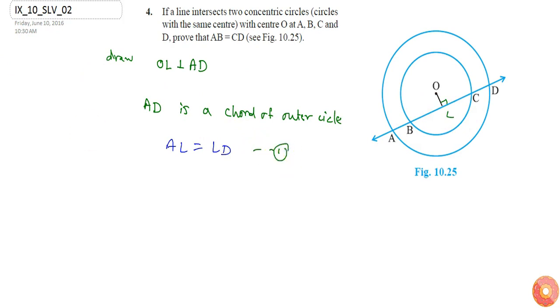Since BC is a chord of the inner circle and OL is also perpendicular to BC chord, I can say that OL divides the chord BC into equal parts. So BL will be equal to LC. Let's say this is equation number two.